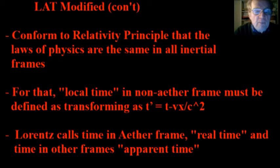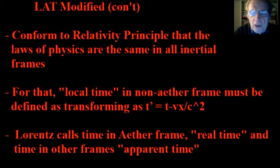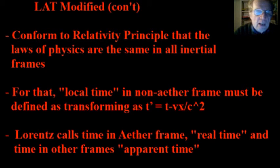Now that we have simulated the speed of light as the same for all inertial frames, it seems like we have extended the relativity principle of mechanics to laws of physics for light and electromagnetism. How did Lorentz think about this? He came up with the concept of local time in non-ether frames, and said that local time must be defined as transforming according to this component of the Lorentz transformations. Lorentz called time in the ether frame 'real time' — like an absolute time — and time in other frames as 'apparent time,' just observed time. Quite different than special relativity.